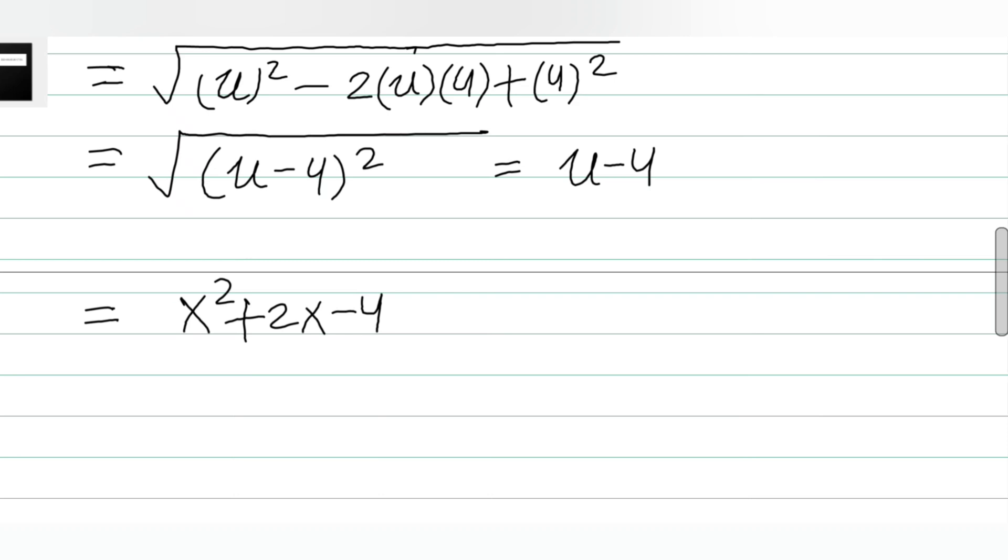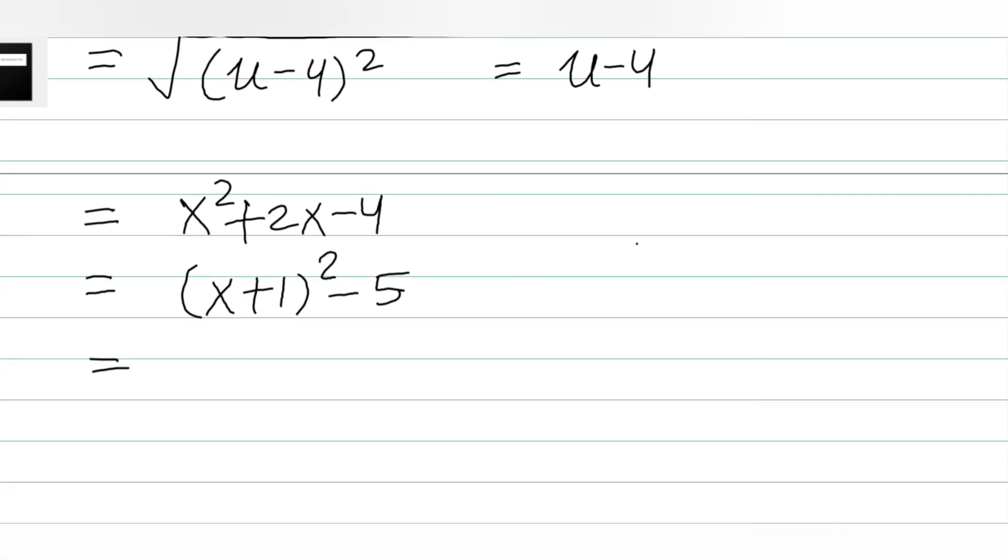Now if you try to complete the square, what you will get is (x+1)² - 5. Now we know that the value of x we have taken is 10002, so put it and we'll get